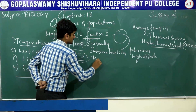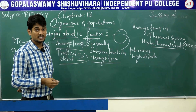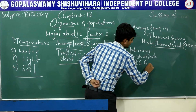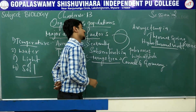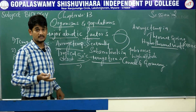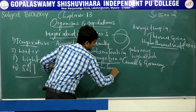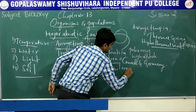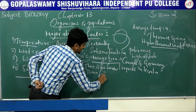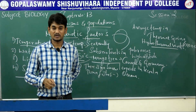For example, mango trees cannot grow in temperate countries like Canada and Germany. There are no snow leopards in Kerala. The tuna fishes are rare beyond the tropical latitudes of the ocean. These are examples showing how temperature affects the distribution of organisms.